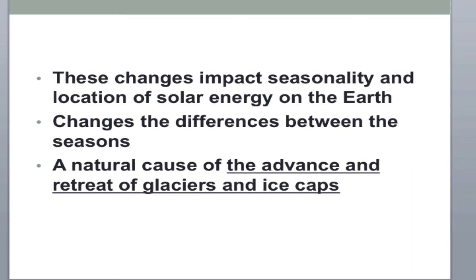Each individual factor — tilt, wobble, and shape of our orbit — does not have a huge impact on climate on its own. However, when we put all of them together working in combination, they create climate change that can cause glaciers to either grow or melt. This cycle usually occurs every 100,000 years. You should remember that CO2 concentrations and temperature change on the same 100,000-year cycle. This is no coincidence — the Milankovitch cycles have been given credit for the pattern we see in temperature and CO2.